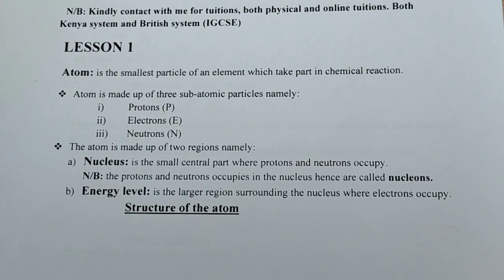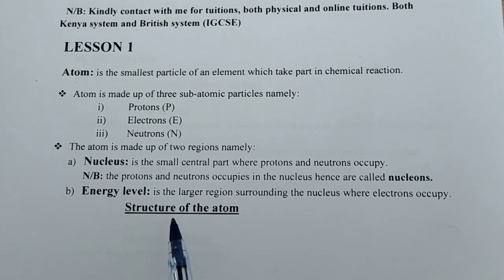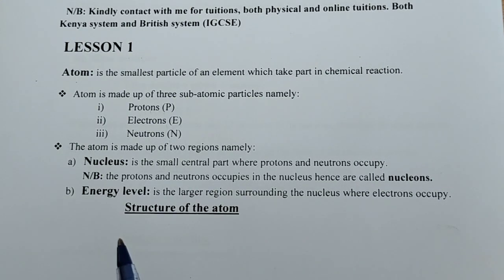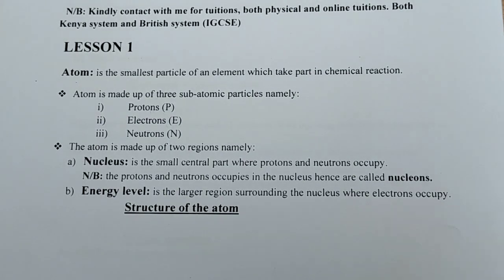Protons and neutrons are called nucleons because they occupy the nucleus. The other region of the atom is the energy level. The energy level is the larger region surrounding the nucleus where electrons occupy. So the energy level is the region that surrounds the nucleus, and it is occupied by electrons.